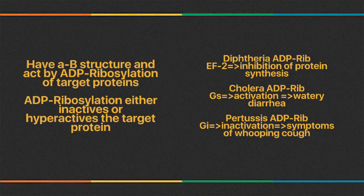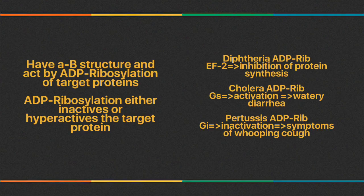Exotoxins are composed of A-B subunits: A is active, B is for binding. They act by ADP ribosylation of target proteins, either inactivating or hyperactivating them. There are three mechanisms of action. For example, Diphtheria ADP ribosylates elongation factor 2, which inactivates the protein, leading to inhibition of protein synthesis.